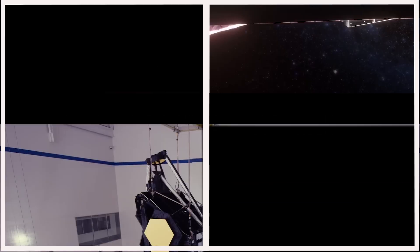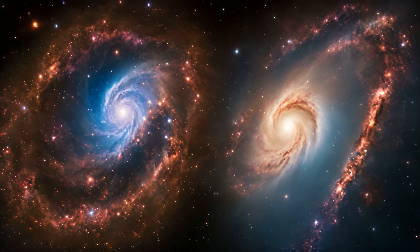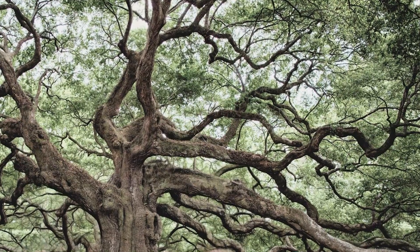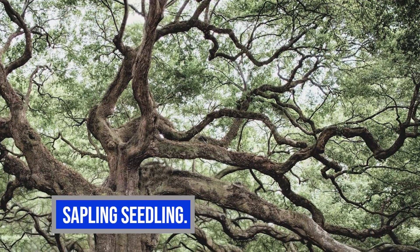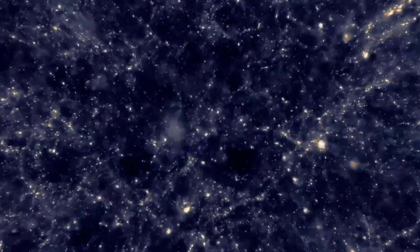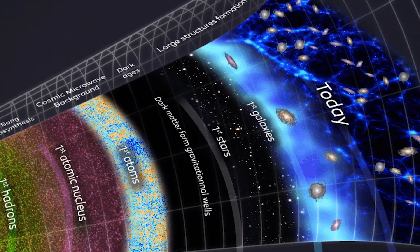The Webb Telescope just shattered reality. Webb has caught galaxies that shock scientists. Some are massive and full-grown, just 200-300 million years after the Big Bang. That's like spotting a fully grown oak tree in what should be a sapling seedling. How did these structures build so fast? Our standard cosmic model, which assumes slow growth, can't explain it. So Webb's findings are rewriting the timeline.